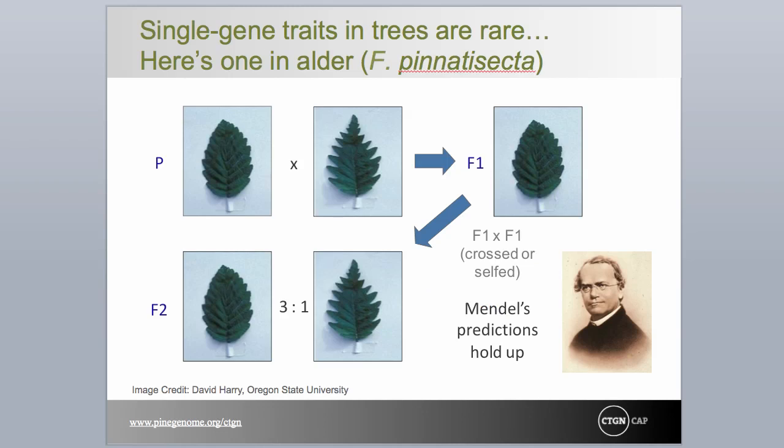In the year 1900, Mendel's principles were independently rediscovered by no fewer than three scientists — Correns, de Vries, and von Tschermak. This marked the beginning of modern genetics. For years, doing Mendelian genetics in trees was hindered by the lack of single-gene traits. One of the few observed, illustrated here, is a leaf variant. Crosses between normal and deeply dissected leaves of alders result in normal-looking leaves. The subsequent cross among the progeny of the first generation resulted in a three-to-one segregation of leaf types, just as Mendel predicted with peas.